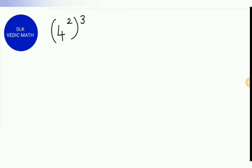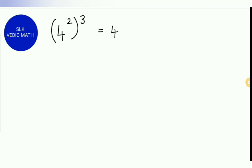Let's see another example: 4 power 2, raised to the power of 3. Here the base is 4 and the exponents are 2 and 3. So we keep the base the same and multiply the exponents. We keep 4 and multiply 2 and 3, giving 4 power 6.